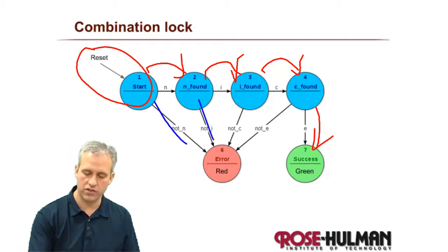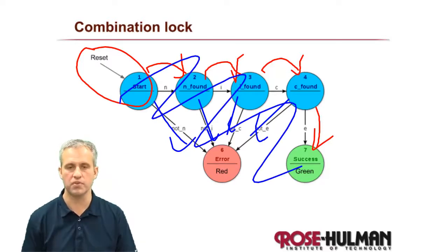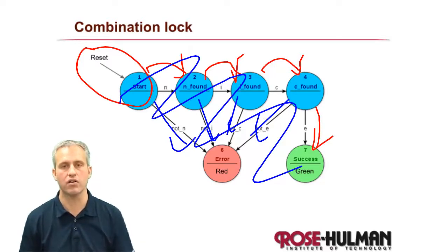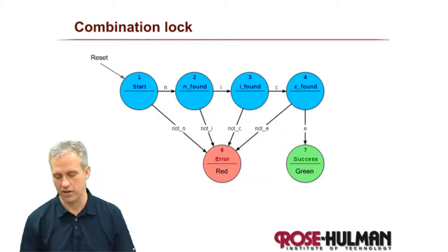However, if at any point you do something bad, you come into failure. We're not implementing this specific finite state machine, we're actually going to make our own, but this is the concept that you'll see in any combination lock finite state machine.